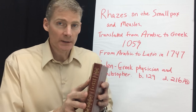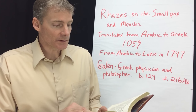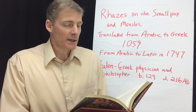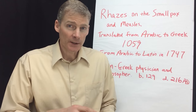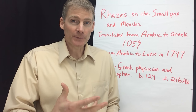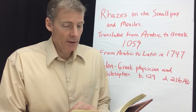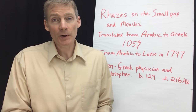Here's what Rhazes says about Galen — they're talking about smallpox and measles. Referring to Galen, it says he mentions it — meaning inflammation, smallpox, and measles — also in his treatise on pulses. Now, pulses are legumes.